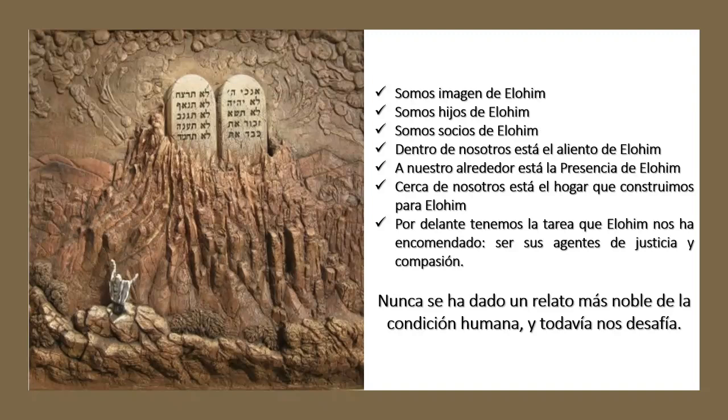Somos imagen de Elohim, somos hijos de Elohim, somos socios de Elohim. Dentro de nosotros está el aliento de Elohim, a nuestro alrededor está la presencia de Elohim, y cerca de nosotros está el lugar que construimos para Elohim. Por delante tenemos la tarea que Elohim nos ha encomendado: ser sus agentes de justicia y compasión. Nunca se ha dado un relato más noble de la condición humana — y todavía nos desafía. Eso es lo que se trata el Sefer Shemot.